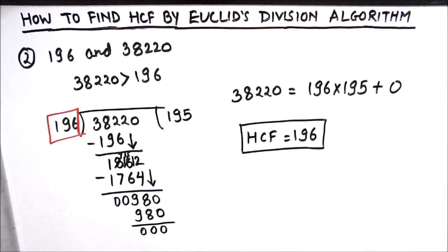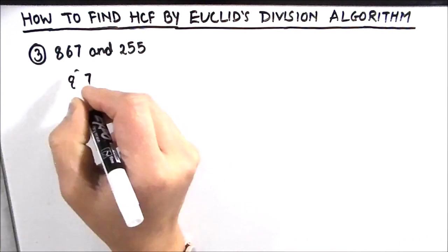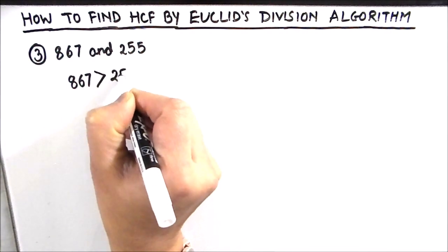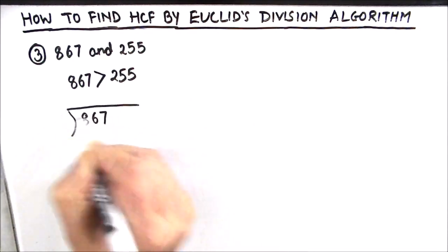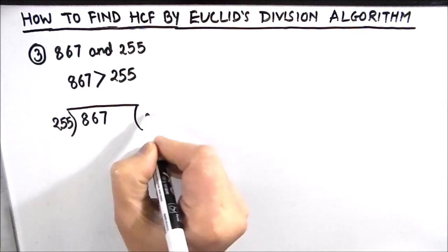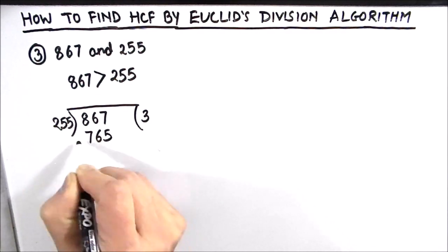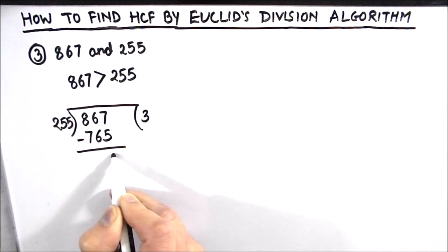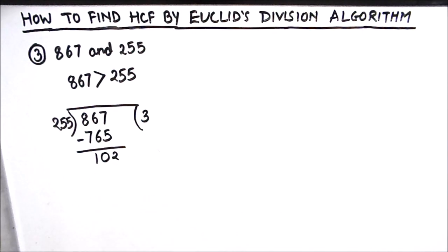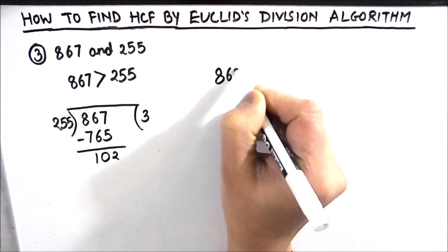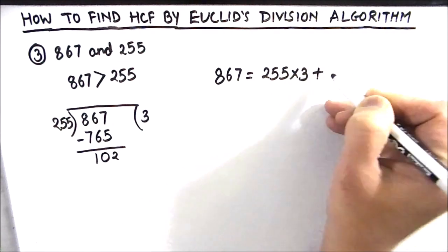Let's solve our final example and find the HCF of 867 and 255. As 867 is greater than 255, we divide 867 by 255. It goes 3 times — 255 times 3 is 765. Subtracting: 7 minus 5 is 2; 6 minus 6 is 0; 8 minus 7 is 1. The remainder is 102. So we write 867 = 255 × 3 + 102.